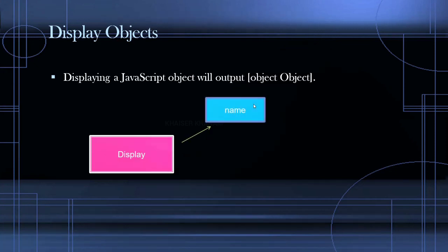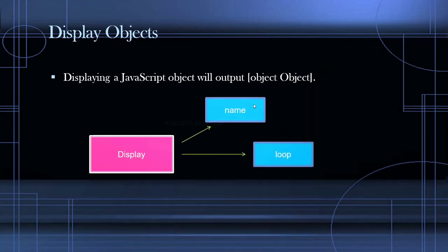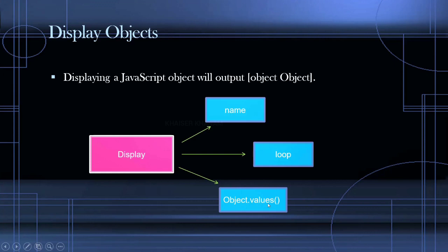We can display using the name property — we have name-value pairs inside an object. Using that name we can display a property using dot operator or using an expression. Using that we can also display the object using loops. Then using Object.values we can display the object, and finally using JSON.stringify.